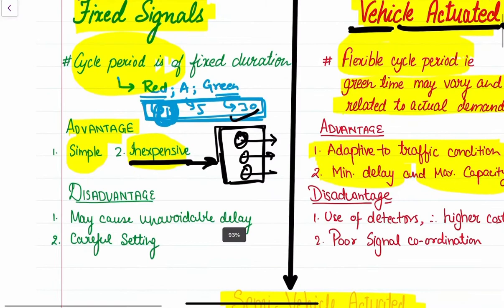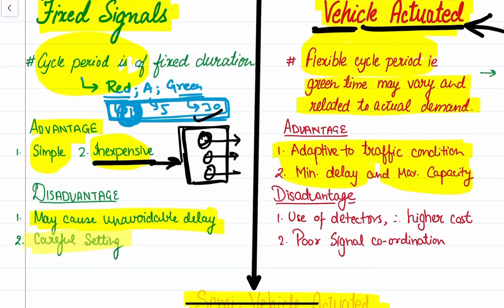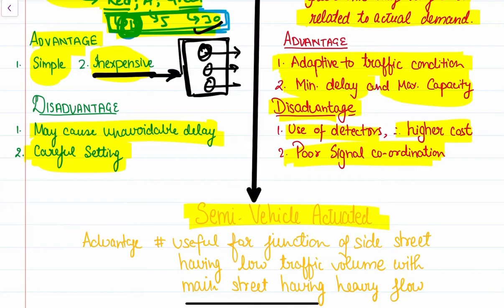The disadvantage of fixed signals is that it causes unavoidable delay and we have to be very careful in allowing the time for the respective lights. The disadvantage of vehicle-actuated type is that it uses detectors, so the cost is high, and there is poor signal coordination.